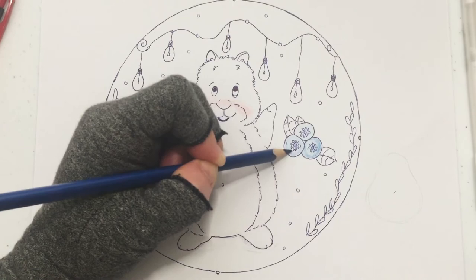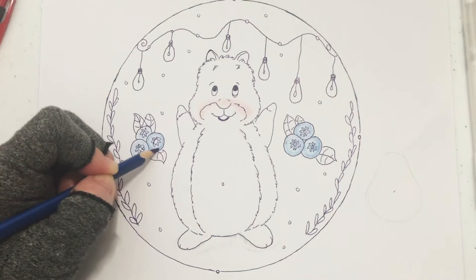I used white gel pen to cover up my mistakes and to add a little bit of highlights to the hamster's eyes.